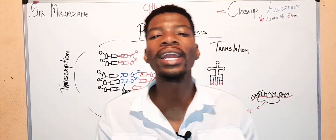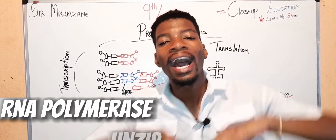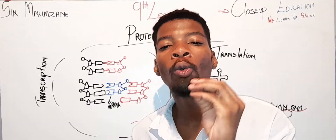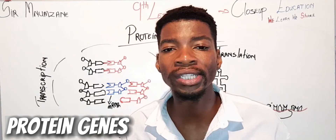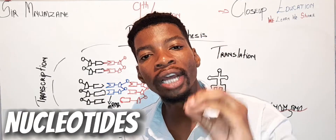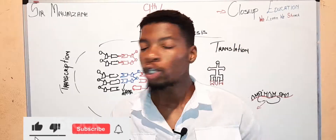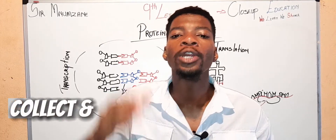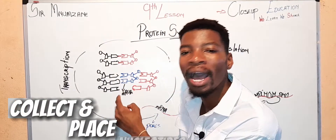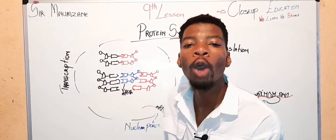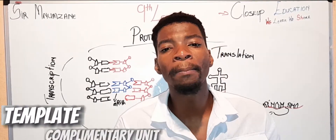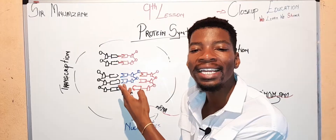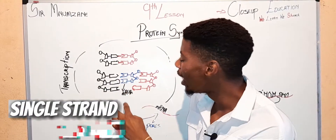How does it begin? It begins when an RNA polymerase unzips the DNA molecule at a specific location where there are protein genes — or where there are nucleotides which code for protein genes. So once it has unzipped that specific location, the RNA polymerase will collect nucleotides and place them according to the DNA molecule, which will be acting as a template.